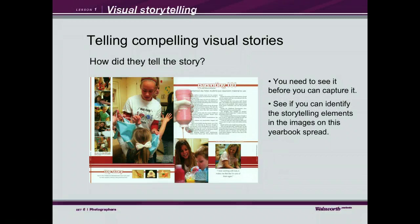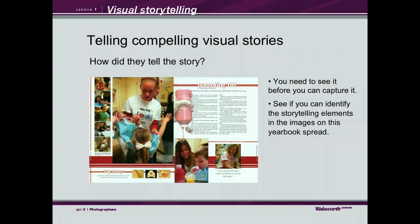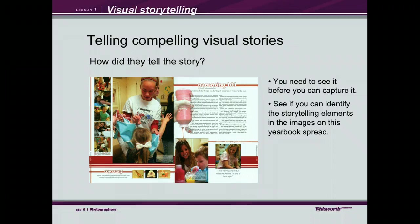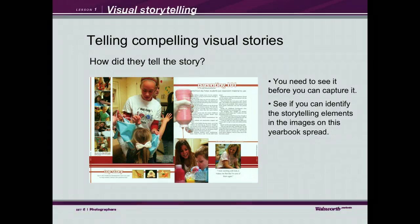Let's look at this yearbook spread — it's about parenting 101 from a school on the Kansas side. Look at the photos and see if you can identify the storytelling elements present. Which ones are there? What is it about these photographs that helps tell the visual story about parenting? Notice the verbal story on the right side, but it's the visual stories that help bring the photos to life — especially now that we live in such a visual society. That wraps up our lecture on telling compelling visual stories.